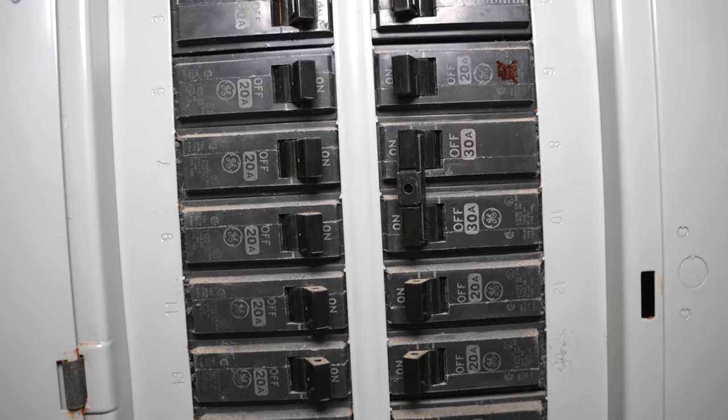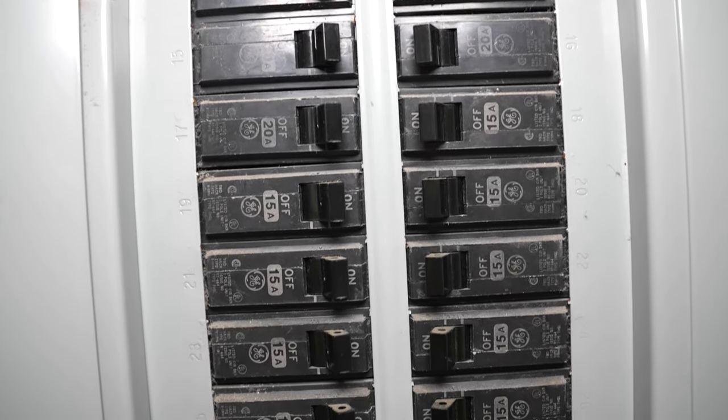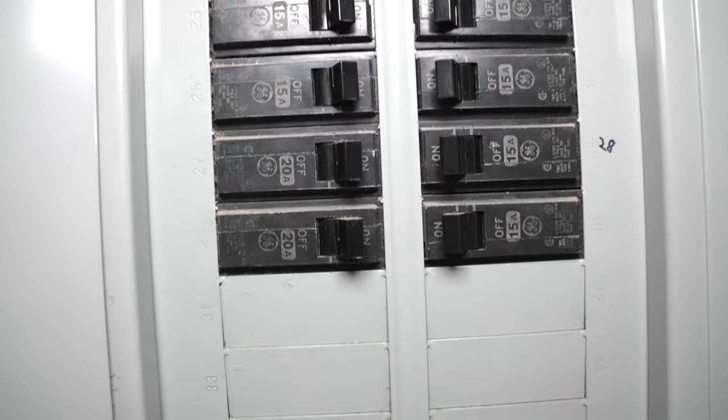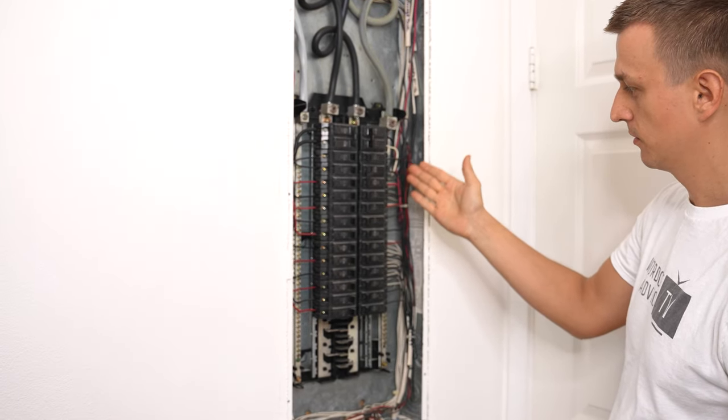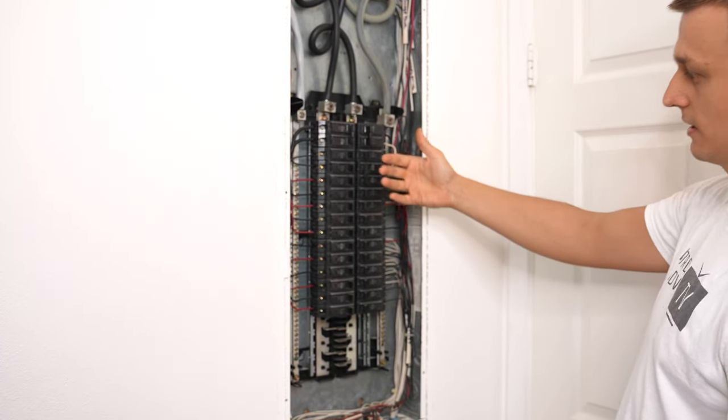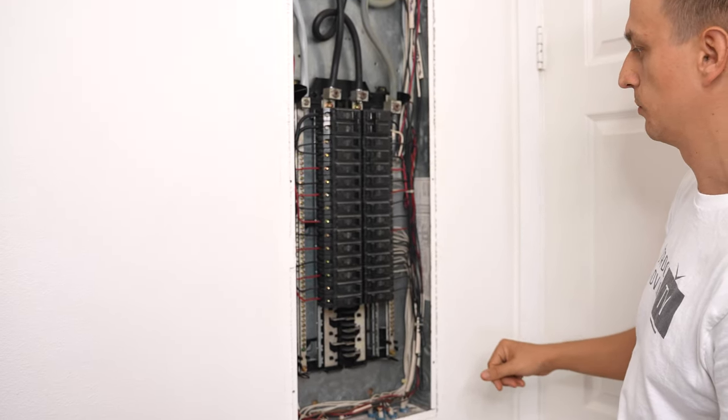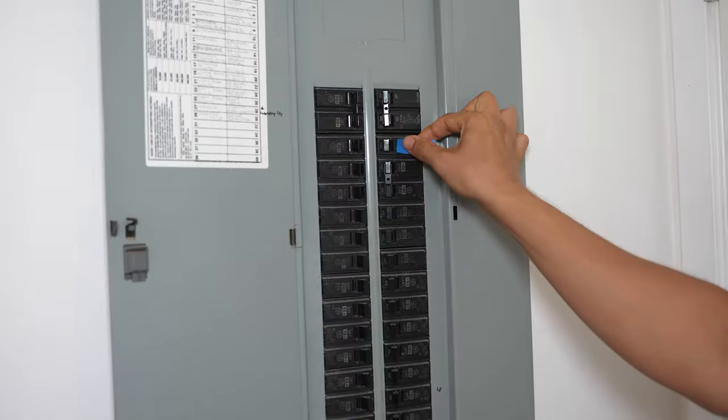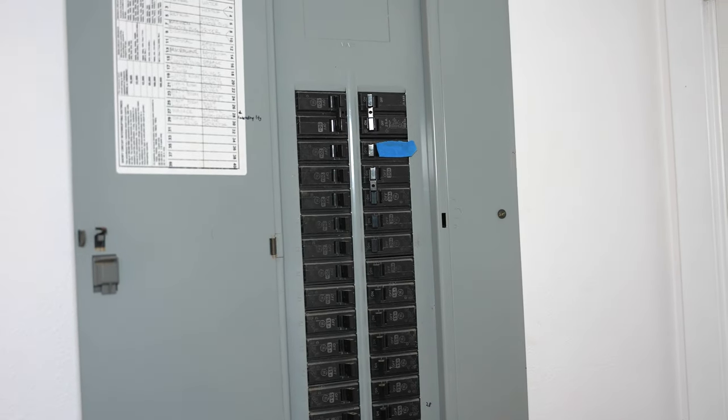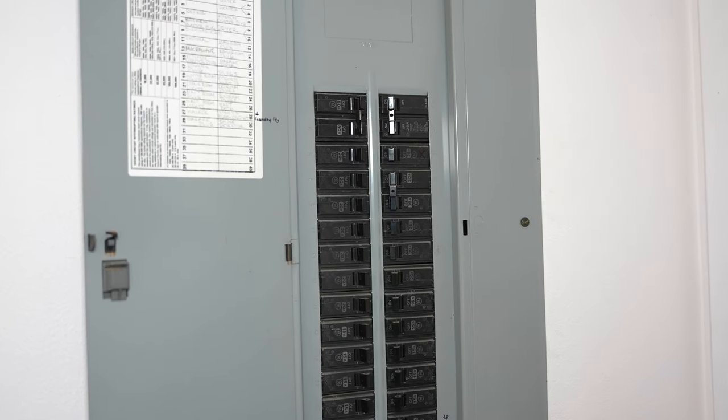By the way, one thing I forgot to mention is that it's a good idea to mark which breaker you're going to be replacing, especially if it's not in the off position. Like if they were all on, once you take the panel cover off, they all kind of look the same. So you get confused which one you're actually replacing. So it helps to mark with a piece of tape or a marker which breaker you're going to be replacing before you pull that cover off.